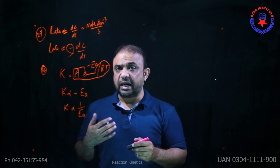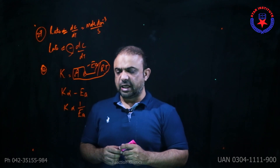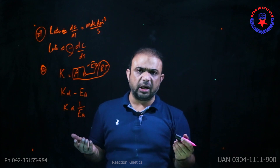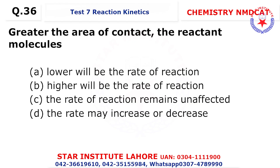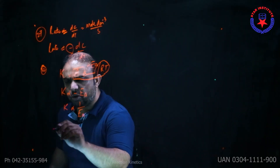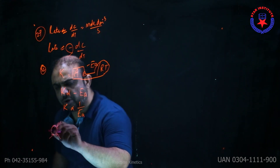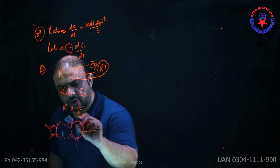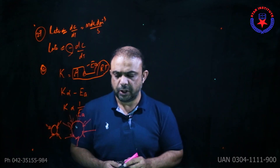Question 34: In the reaction N₂ + 3H₂ → 2NH₃, Al₂O₃ acts as a promoter — iron and iron oxide are the catalysts, and Al₂O₃ promotes them. Question 35: During ignition of petrol in a car engine, a negative catalyst is used — choice C. Question 36: Greater area of contact means higher rate of reaction; smaller molecular size means more collisions and more fruitful collisions.